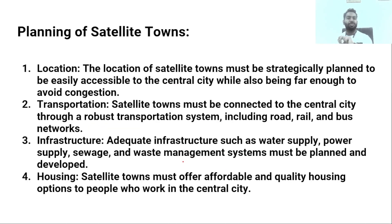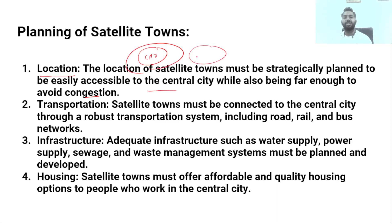Now, what are the primary planning conditions? The most important is first: location. When making a satellite town, it must be strategically planned to be easily accessible to the central city while being far enough to avoid congestion. The location is such that the CBD area is not too far away — it is easily accessible by a road that connects us directly. Transportation must connect to the central city through a robust system including road, rail, and bus networks.